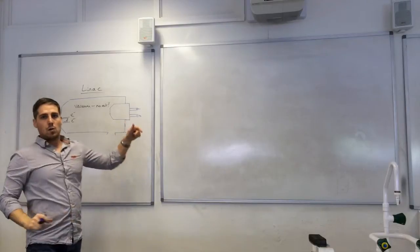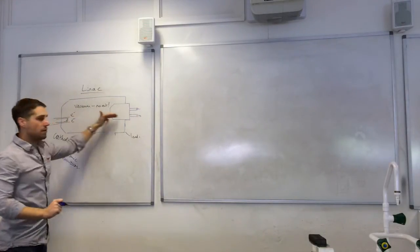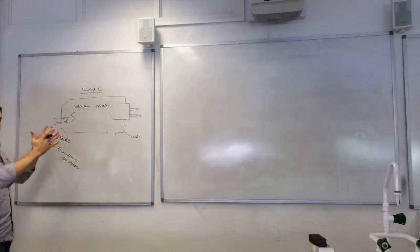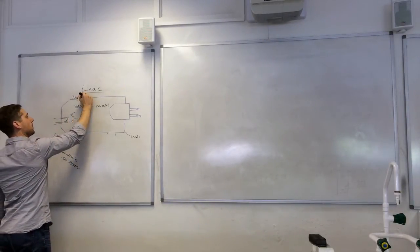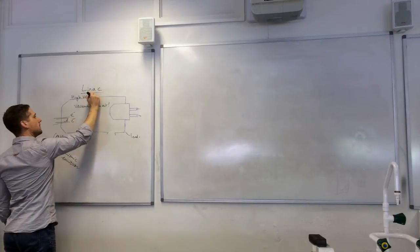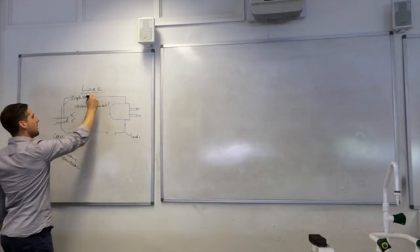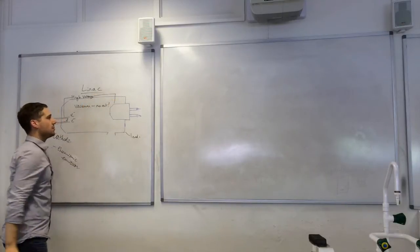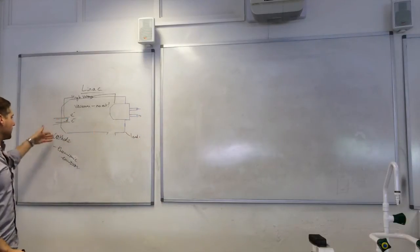Those electrons then, we want those to start moving very fast from left to right here. So we're going to need an electric field to do that. We need a high voltage supply. That high voltage supply is connected between these two points. That's the negative, so the electrons are repelled from there. That's the cathode, it's negative.